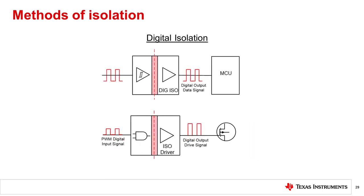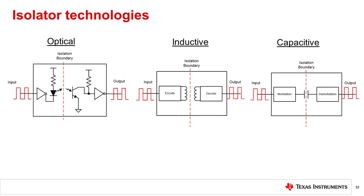Digital isolation is the method of isolating digital input signals. The isolator transfers digital communication across an isolation barrier following the ADC, between microprocessors and FPGAs, and then on to FET and gate drivers. There are three primary technologies used for analog and digital isolation of signals today: optical, inductive, and capacitive.